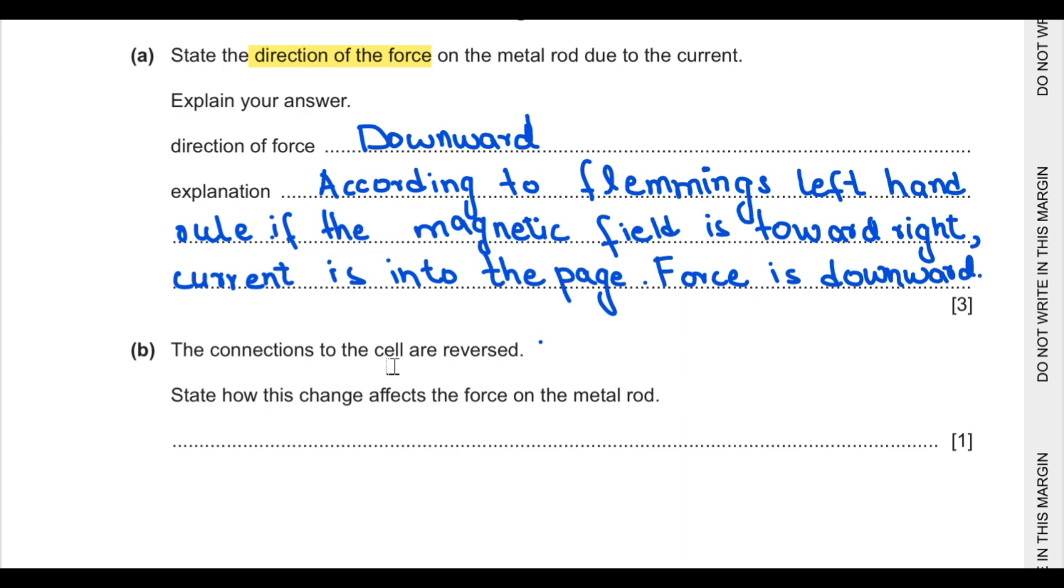Part B says the connections to the cell are reversed. State how this change affects the force on the metal rod. If we reverse the direction of the cell, we reverse the direction of current, and if current is reversed the force would be reversed, so force will be upward.